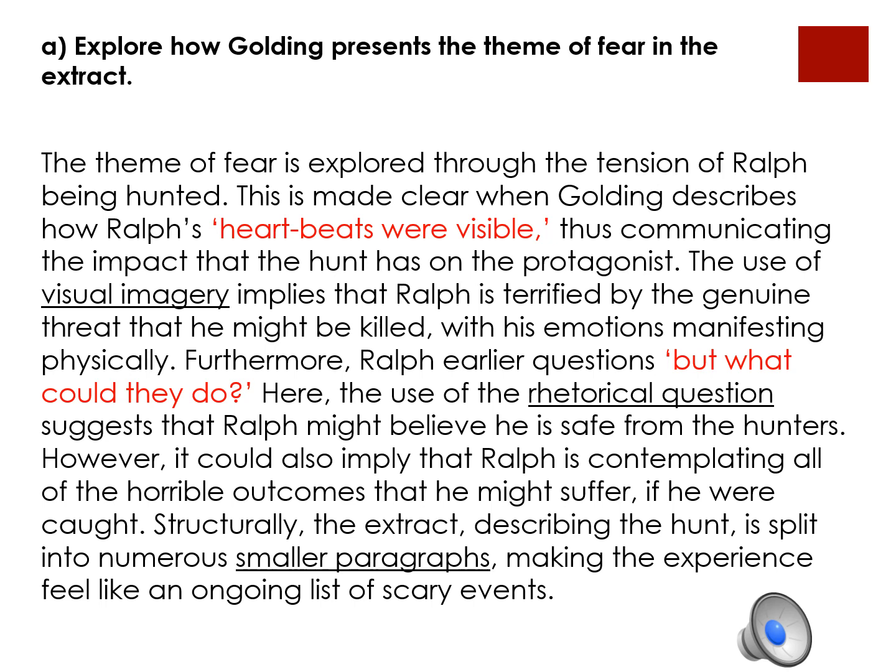If people have a quick read through the paragraph, you'll also see that the explanations are specific. It's not just saying something like visual imagery creates an image in the reader's head, which you theoretically could say for any quotation. In this case, it's saying that visual imagery implies that Ralph is terrified by the genuine threat that he'd be killed, with his emotions manifesting physically. And I think the top marks will go to the people that are really able to provide specific analysis that provides a unique perspective.